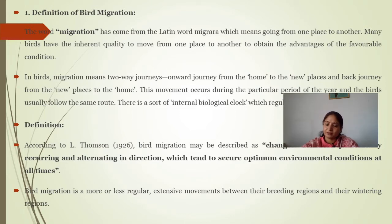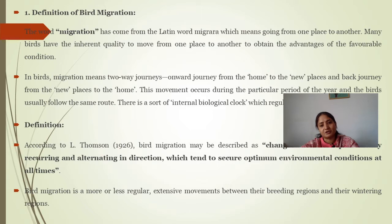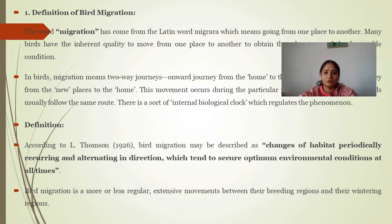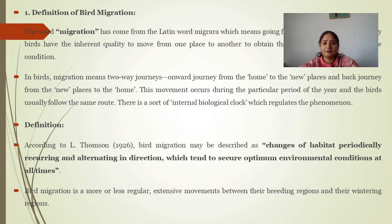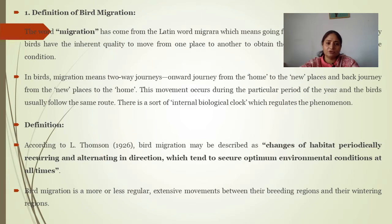The second cause is feeding, and the third is breeding. Breeding is the most prominent reason. As the development of gonads marks the age of maturation, the migration process is normally seen in adults. In birds, migration means a two-way journey from the home to a new place and back. The movement occurs during a particular period of the year, and birds usually follow the same route.